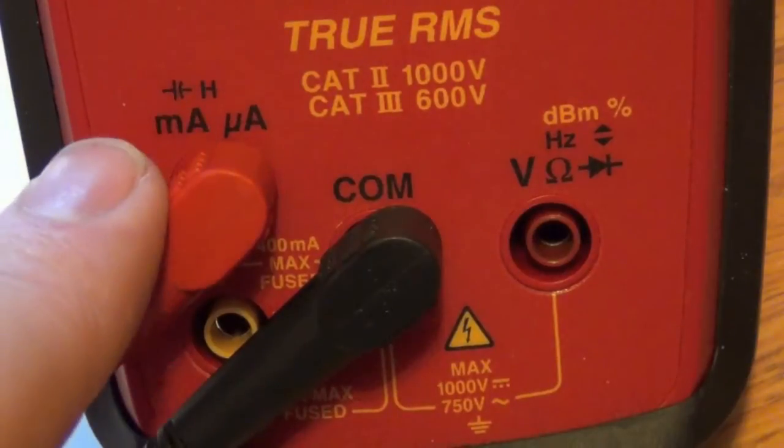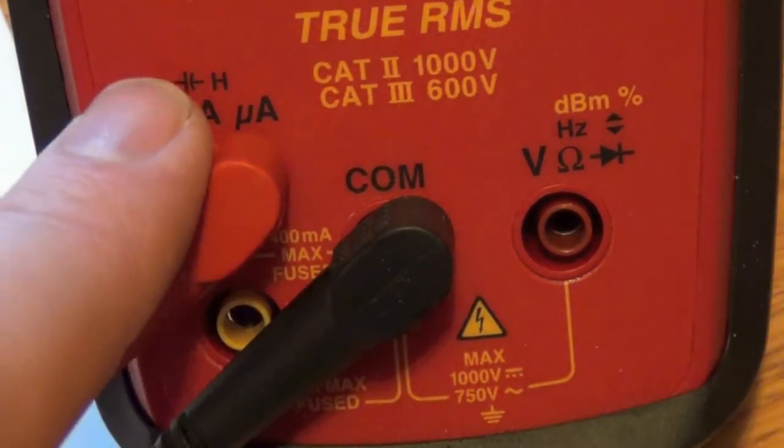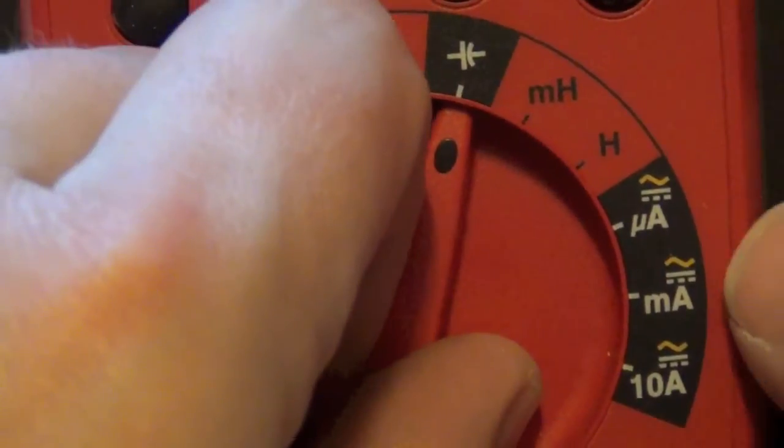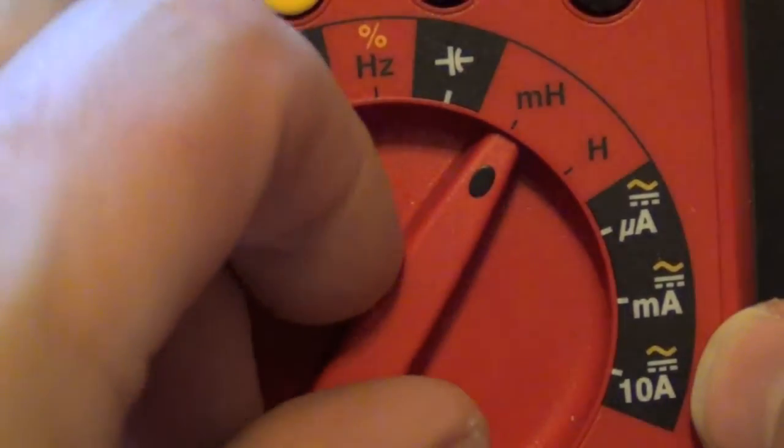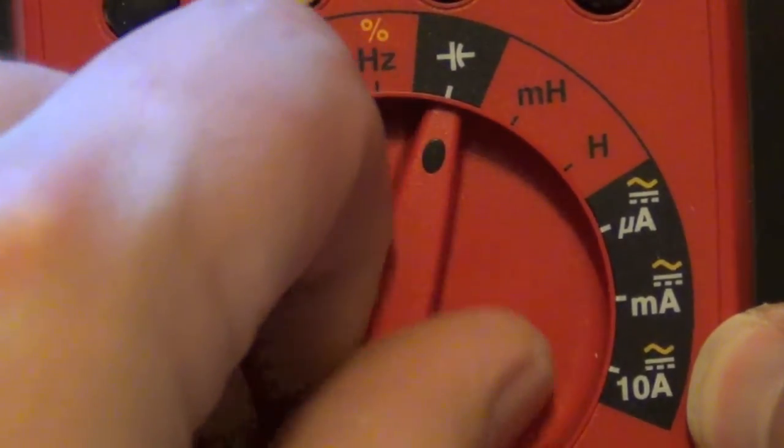To measure inductance, the first thing we want to do is set our black to common and our red to the Henry position. So that's the left side. Then we turn the selector to either millihenrys or Henrys. This is not auto ranging like the capacitance.